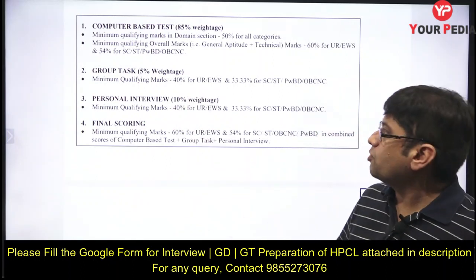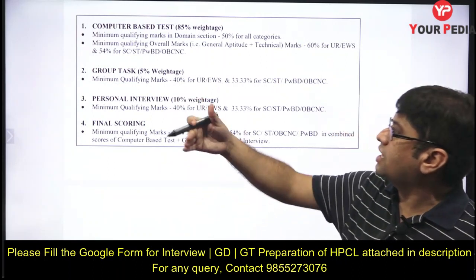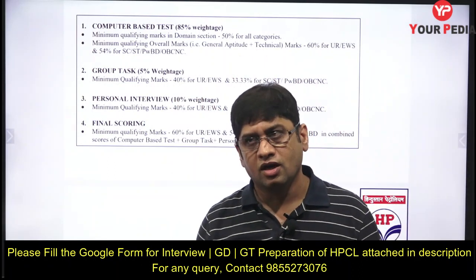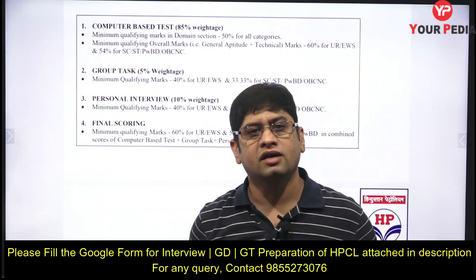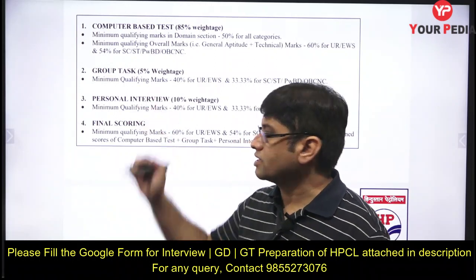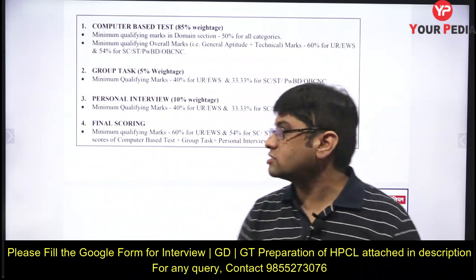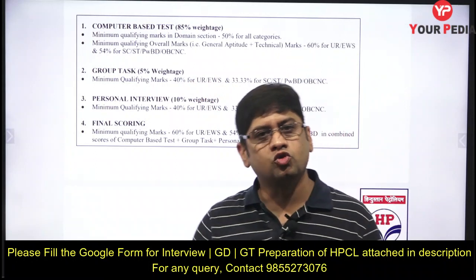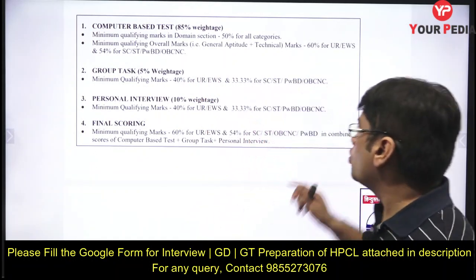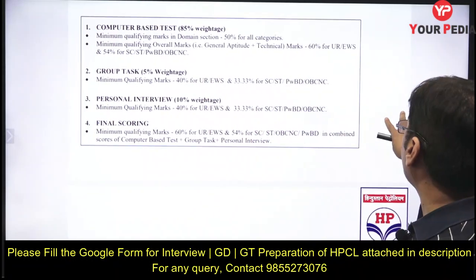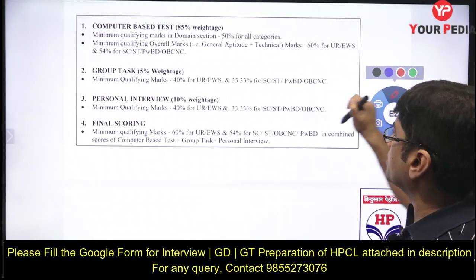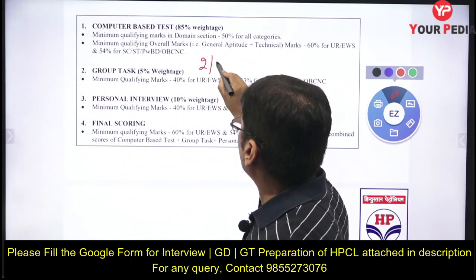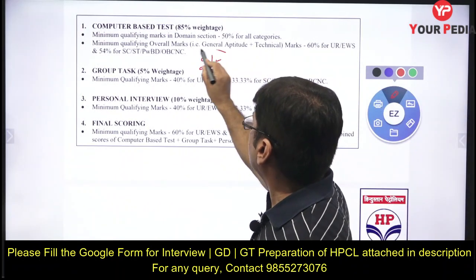There are minimum qualifying marks — 40% for some categories and 33% for others. For example, if Group Task carries 5 marks, you must score at least 2 marks (40%) to qualify. Falling below this minimum means elimination regardless of your written exam score.